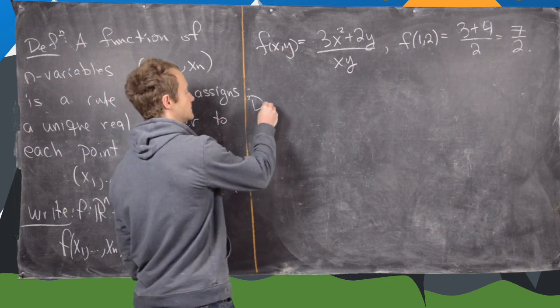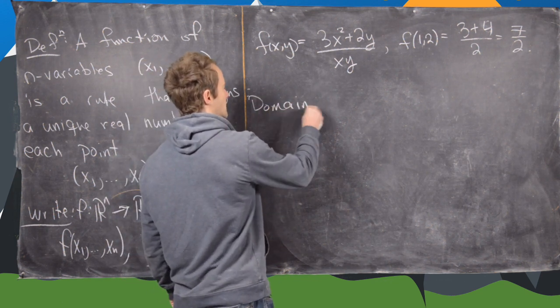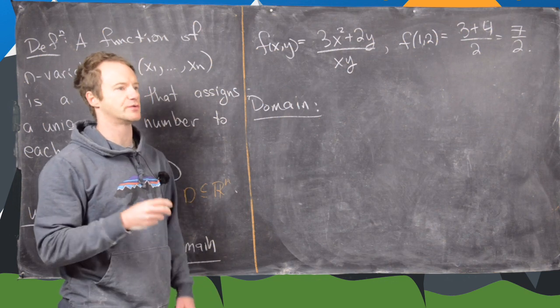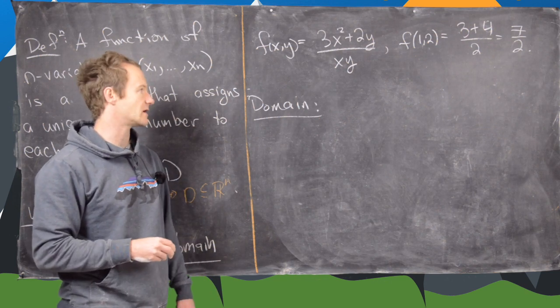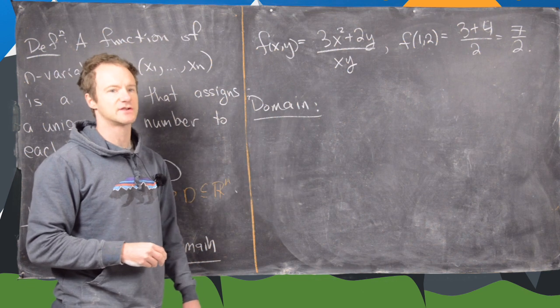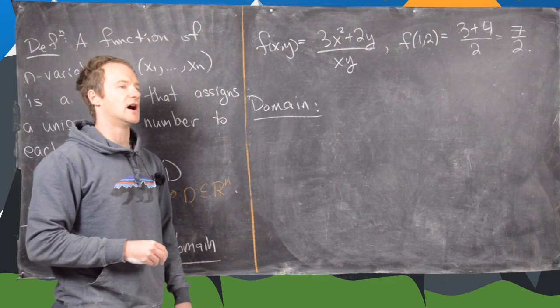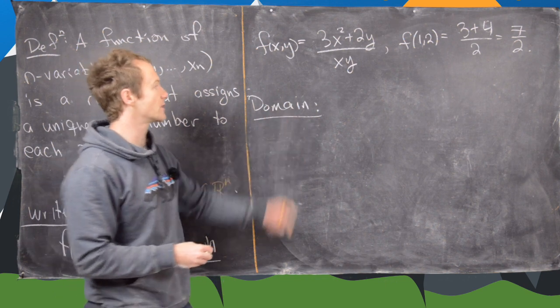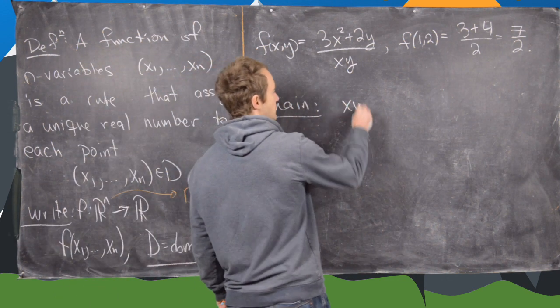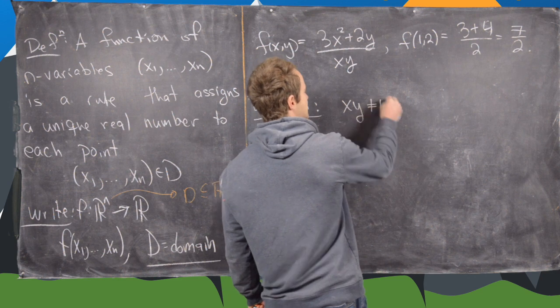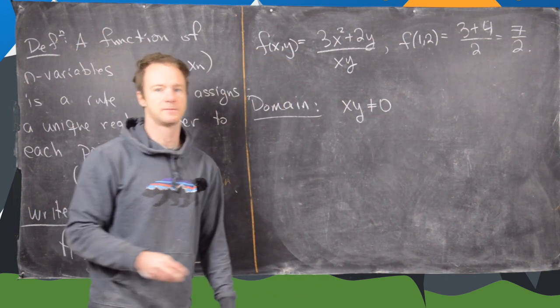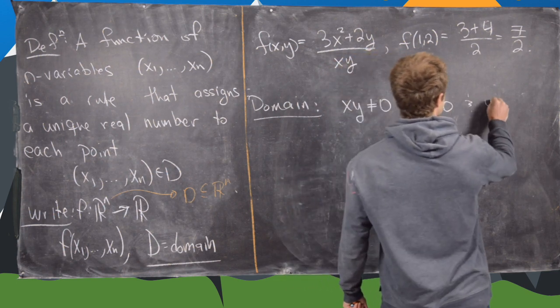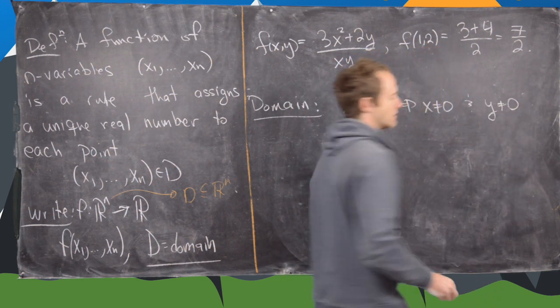Now what about the domain? The domain is going to go the same way that would for one variable function. You want to look for all the rules that you can't break: zeroes in the denominators, negatives under square roots, non-positive things in natural logs and so on. So here what we want is we want x times y to not be equal to zero. So that means x is not equal to zero and y is not equal to zero.